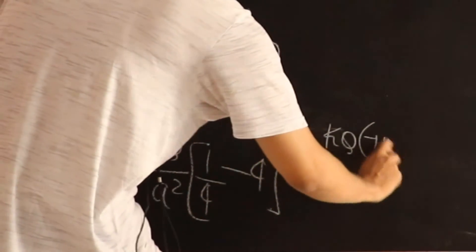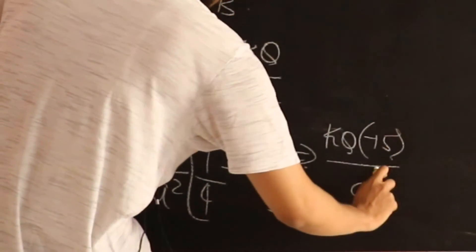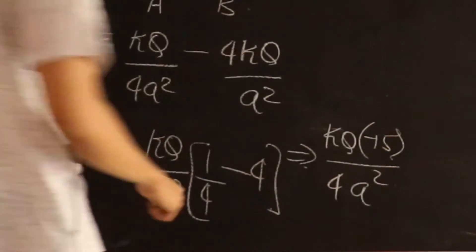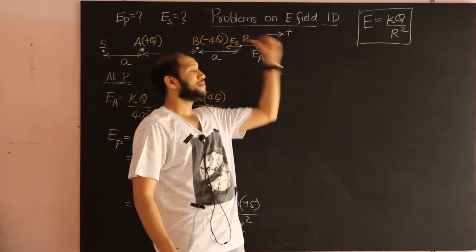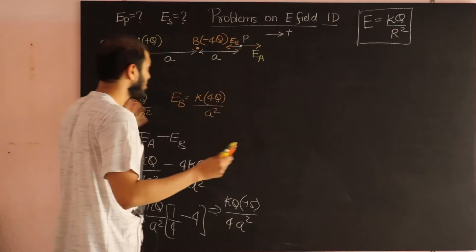Notice, I get a minus sign. All that is telling me is that the electric field should be in this direction. So that's okay. So let me write the magnitude now.